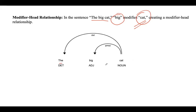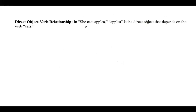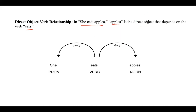We already know 'the' is a determiner and 'cat' is a noun. Next we have the direct object-verb relationship. If you take the sentence 'she eats apples', 'apple' is the direct object which depends on the verb 'eats'. The word 'apples' depends on the verb 'eats'.